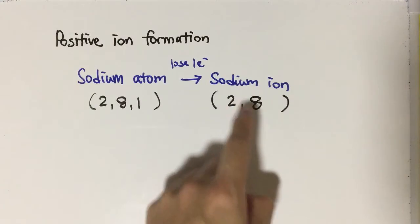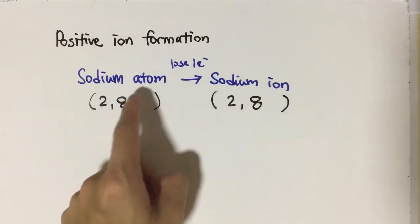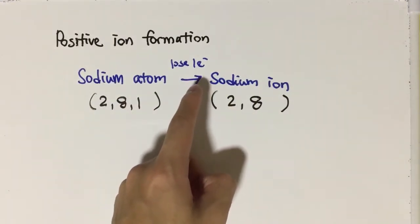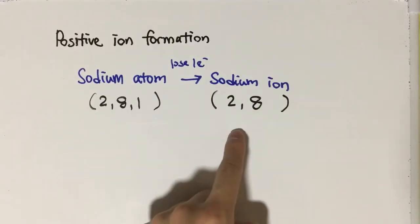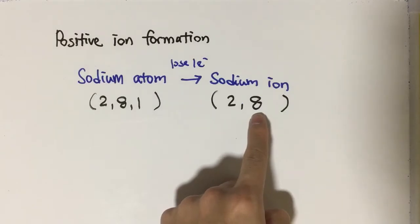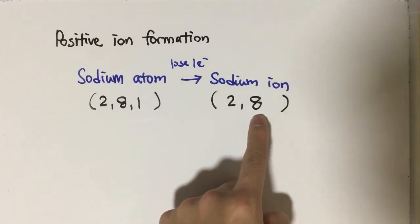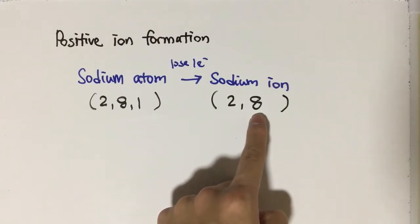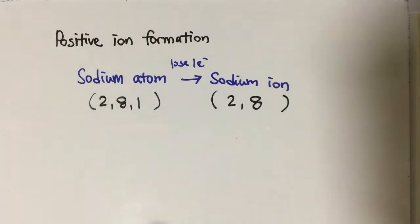Why does sodium atom lose one electron but not ten electrons? Let's take a look at the electron arrangement difference here. For sodium ion, the outermost shell now has eight electrons. Do you still remember the noble gas electron arrangement? That is what makes them become more stable.